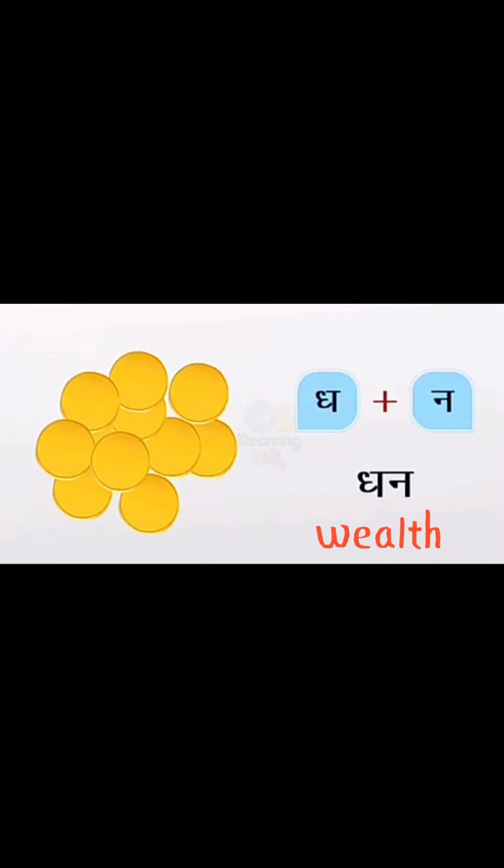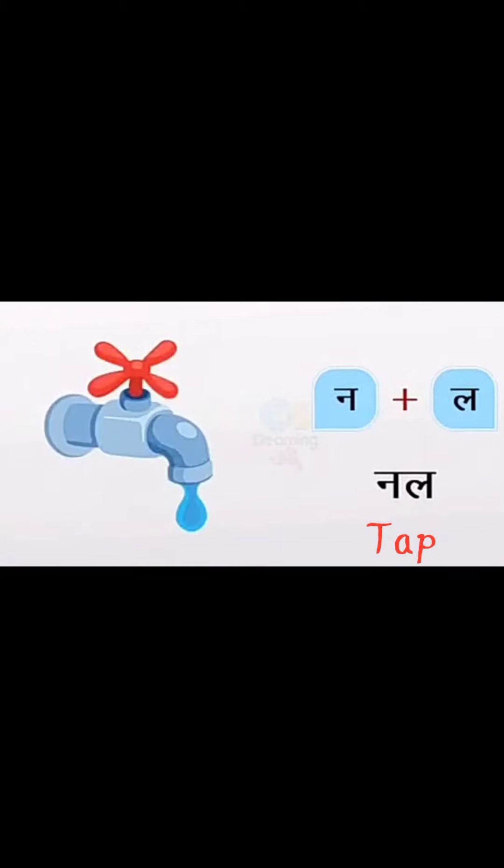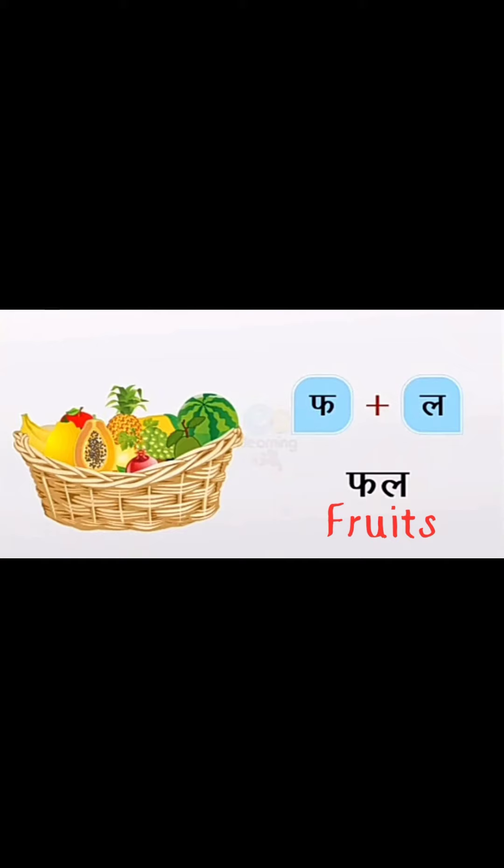Da plus Na — Then. W-E-A-L-T-H. Wealth. Na plus La — Null. T-A-P. Tap. Fa plus La — Ful. F-R-U-I-T-S. Fruits.